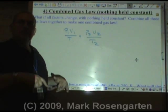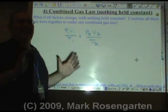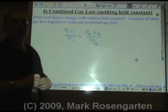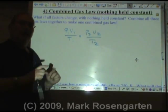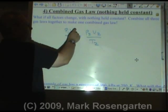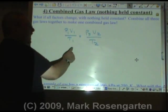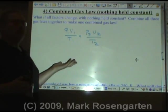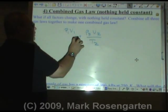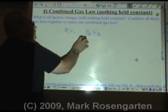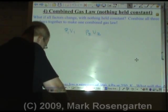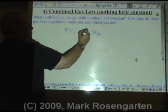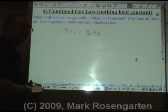With the combined gas law, you can get any of the other gas laws simply by doing this. In Boyle's law, it's pressure versus volume at constant temperature. So if temperature is constant, you don't need it, because it would just simply cancel out and leave you with P1V1 equals P2V2.